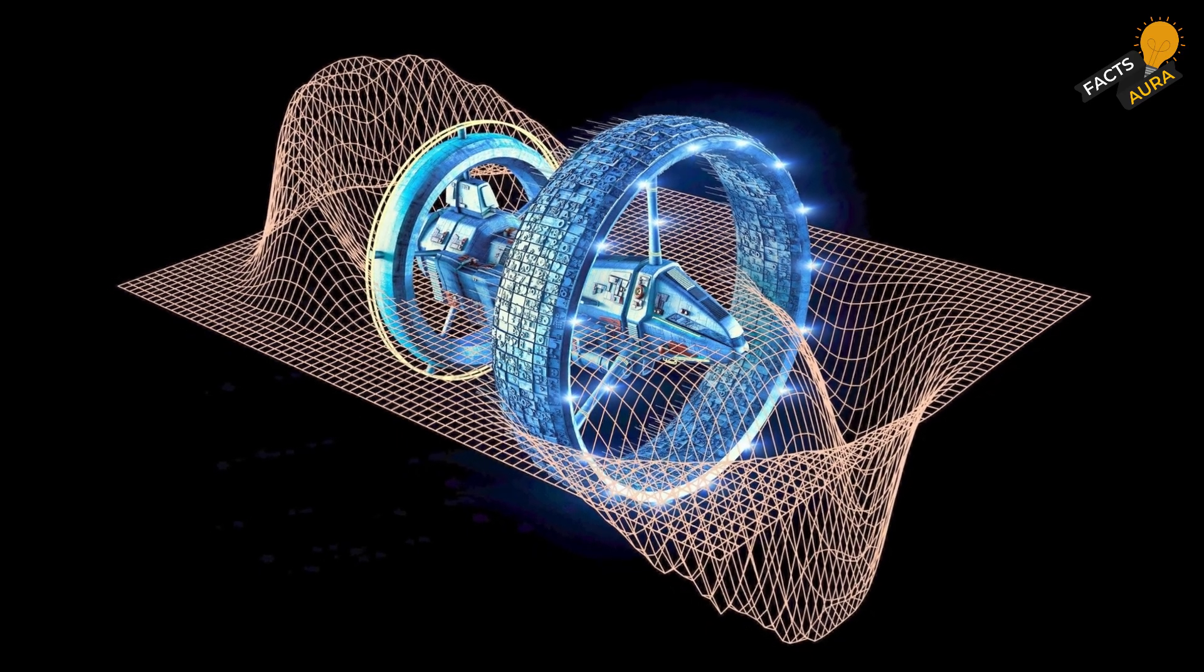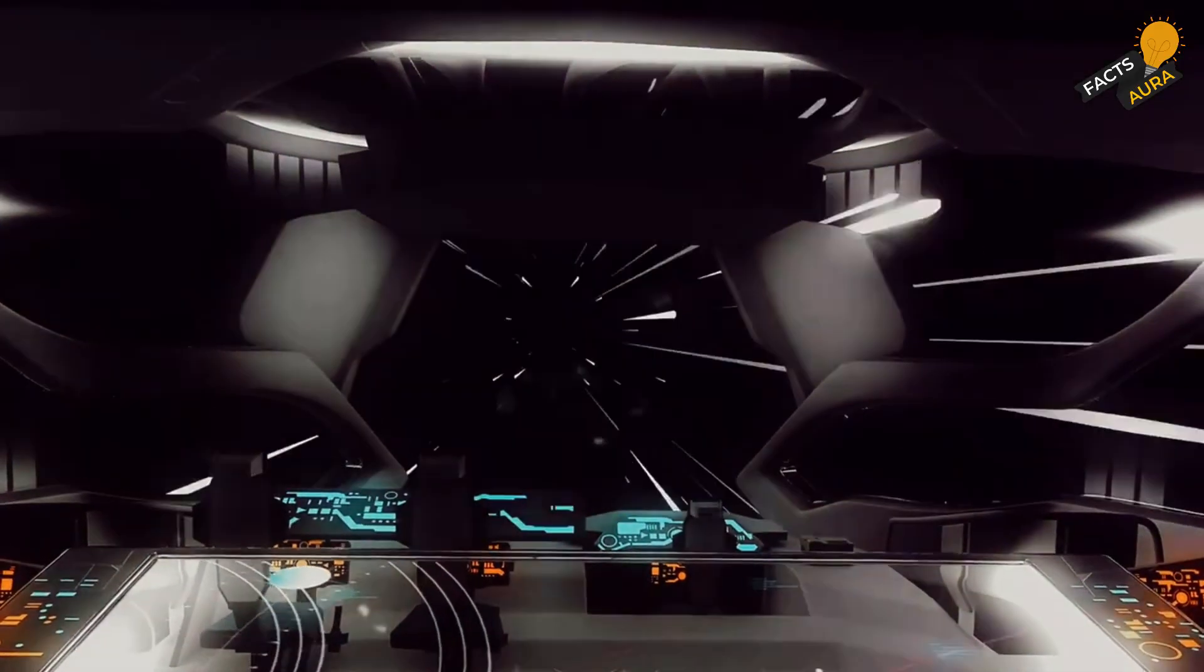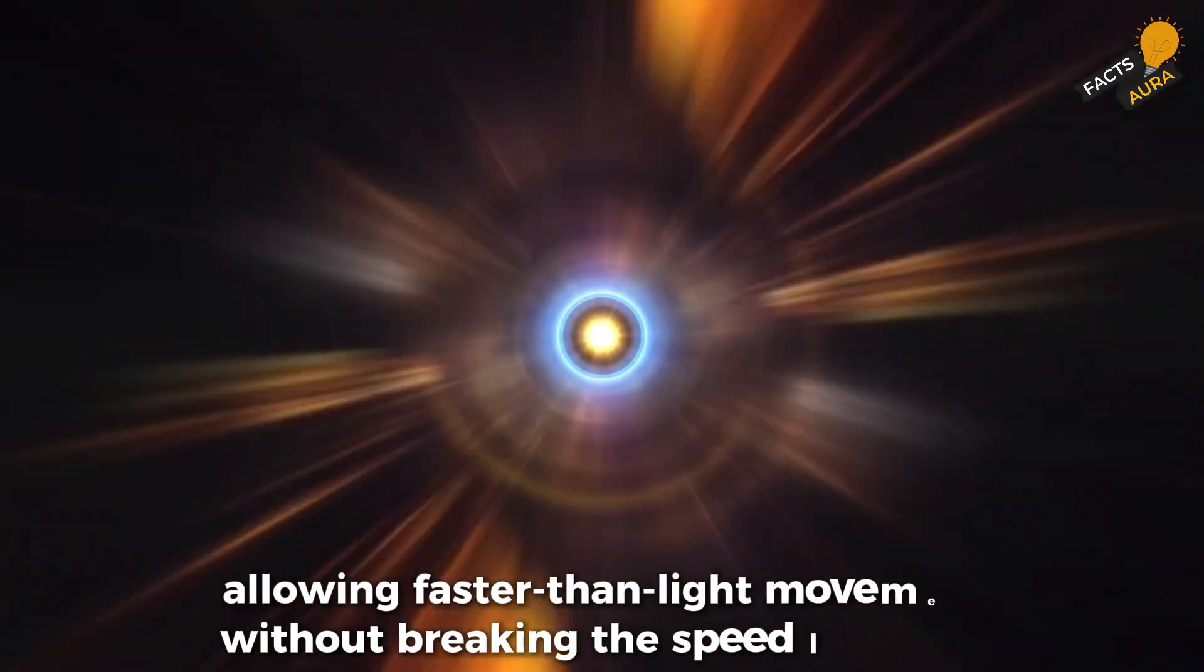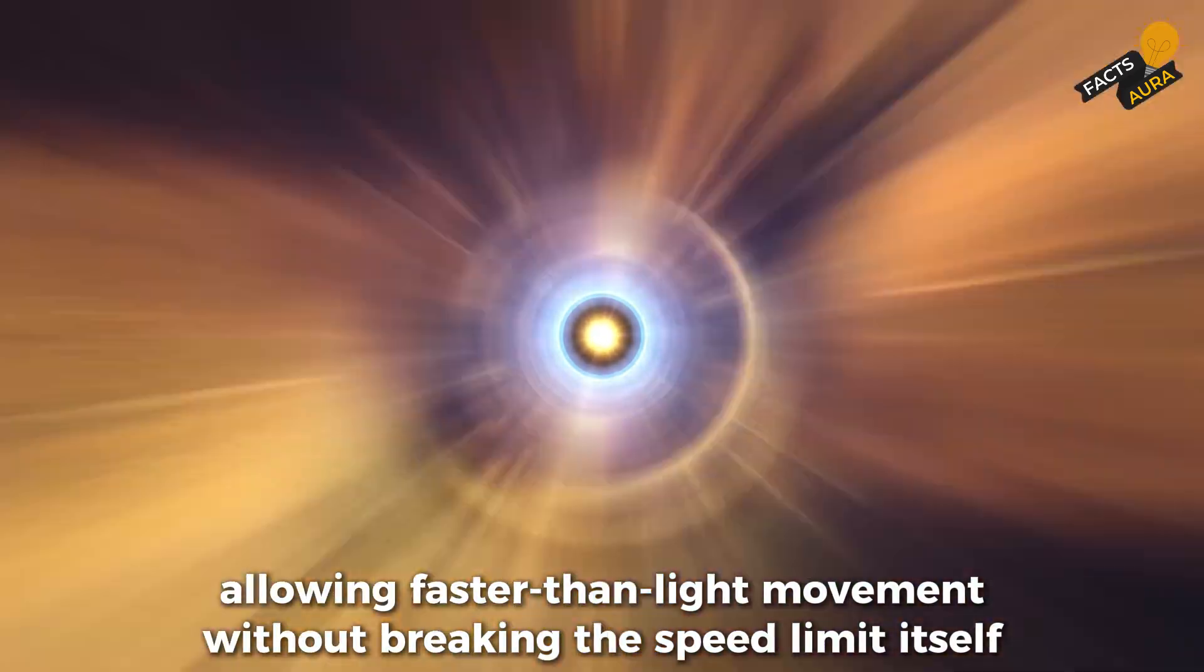of warped space around an object, the Alcubierre drive could theoretically compress space in front and expand it behind, allowing faster-than-light movement without breaking the speed limit itself.